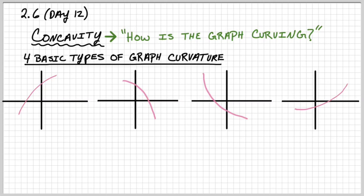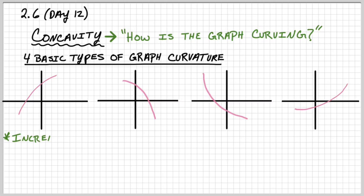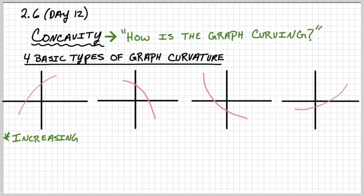Okay, so what can we observe about all four of these? Let's identify the ones that are increasing or decreasing. This first one is definitely increasing. If you read it from left to right, it is most definitely increasing — it starts low, ends up high. So it's increasing from left to right.